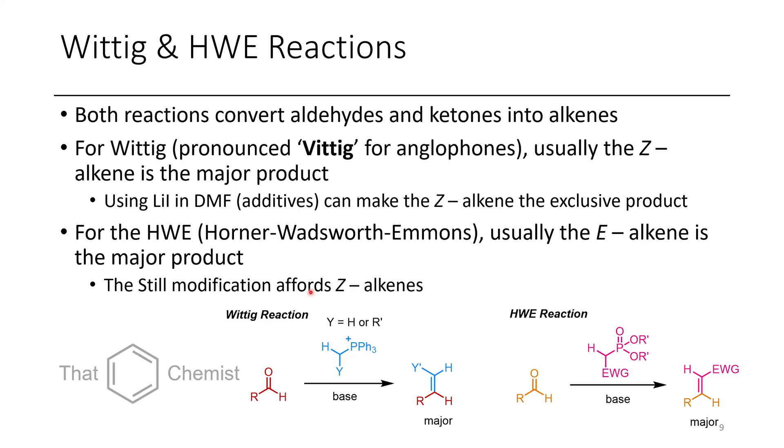Okay, so if you wanted to do an HWE reaction, and instead of getting an E-alkene, you want to get a Z-alkene, what you can do is you can change the OR groups from something like methyl or ethyl to trifluoroethyl. And it just turns out that if the R groups are converted to trifluoroethyl, you'll usually tend to get Z-alkenes as the major product. And later on, when we talk about examples of the HWE, I'll show you an example where this is the case.